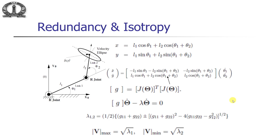One way to resolve this redundancy for the two-degree-of-freedom case is to look at the velocity at the tip. The position vector x and y can be related to theta 1 and theta 2 for a 2R robot as l1 cos(theta1) + l2 cos(theta1+theta2), and y = l1 sin(theta1) + l2 sin(theta1+theta2). Taking derivatives and reorganizing gives x-dot and y-dot in terms of the Jacobian matrix, which we have seen previously.